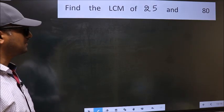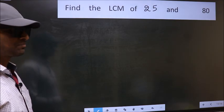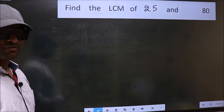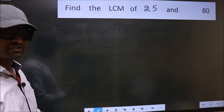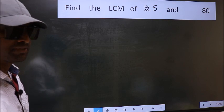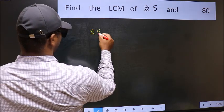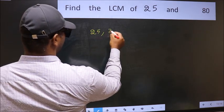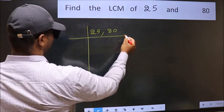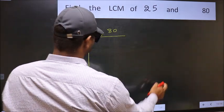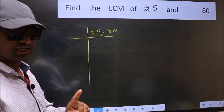Find the LCM of 25 and 80. To find the LCM, we should frame it in this way — writing 25 and 80 side by side. This is your Step 1.